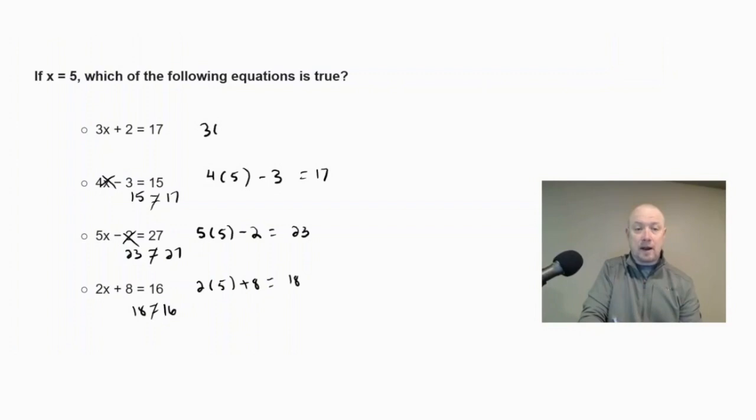But if we look at our first choice here, if we substitute in five for x, we would get three times five plus two. Well, that equals 17. And then if we go and look, we would have 17 on the left side of the equation and 17 on the right. So it is a true statement. So our answer would be the first choice.